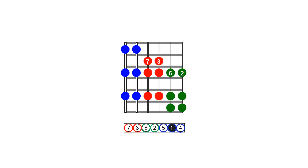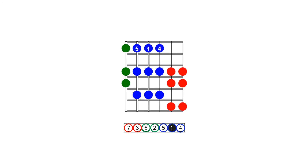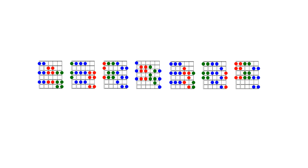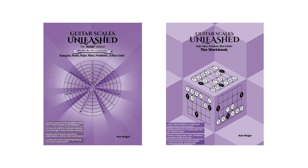Let's recap the interval pattern of seconds in the three notes per string major scale shapes. We have a minor second major second pattern from intervals seven and three, a major second minor second pattern from intervals six and two, and finally two successive major seconds from intervals five, one, and four. There you have it — hacking the major scale into the three notes per string system using the NANDI method. If you would like to learn how to read the entire guitar fretboard as intervals, we recommend the book Guitar Scales Unleashed. The accompanying namesake workbook will provide writing practice to help you master scale visualization with the NANDI method.